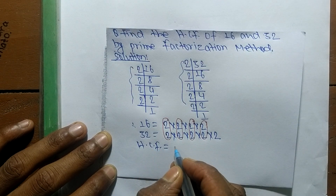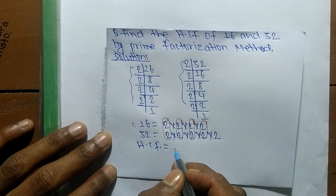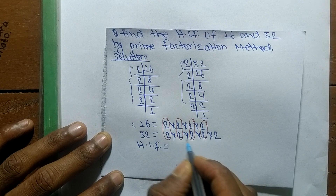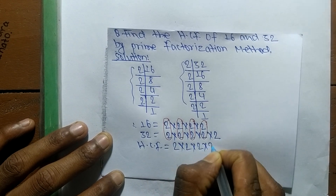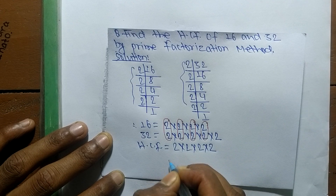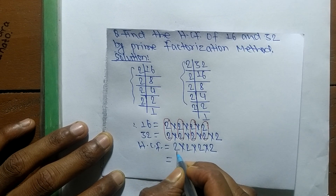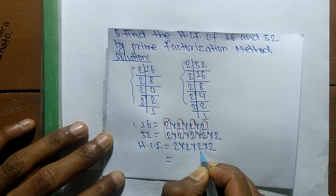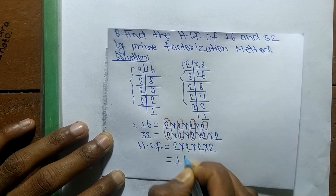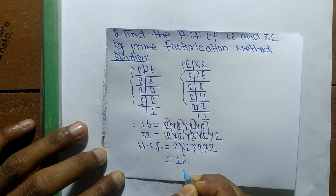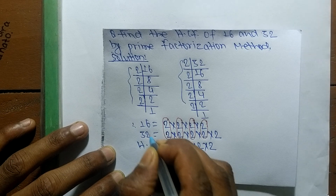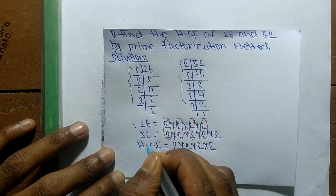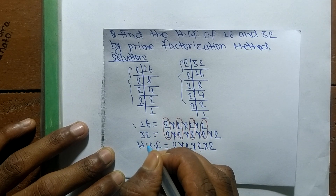The HCF is the product of all the common factors, so it is 2 times 2 times 2 times 2. That gives us 2 times 2 equals 4, times 2 equals 8, times 2 equals 16. So 16 is the Highest Common Factor of 16 and 32. That's all for today — thanks for watching.